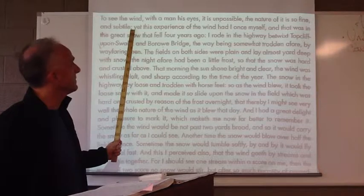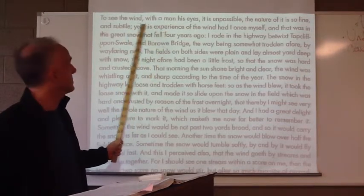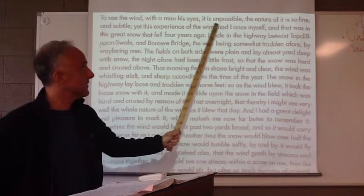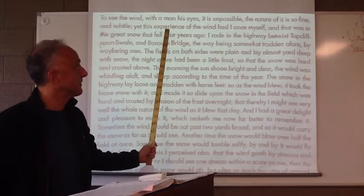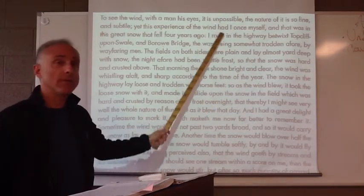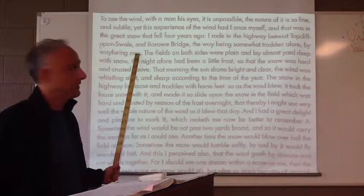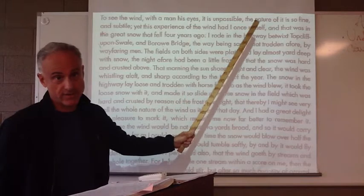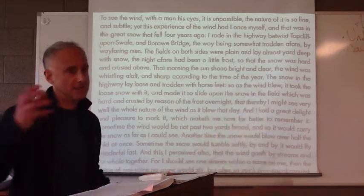Moving on — from 'if you do, even so' up to the first semicolon. It is still the same sentence, but he has a semicolon. He wants to continue on. 'To see the wind with a man his eyes, it is impossible. The nature of it is so fine and subtle.' At the same time that we have a very long sentence continuing on to the fifth line, we also have a bunch of pauses — a sort of syncopated effect. So we have a long sentence and syncopation.